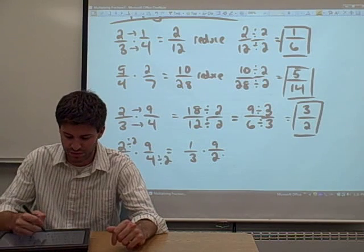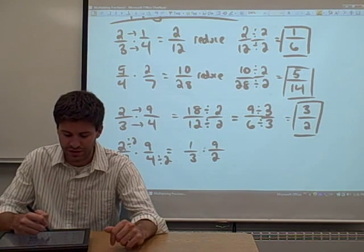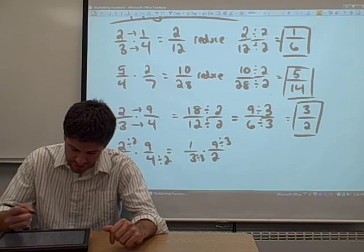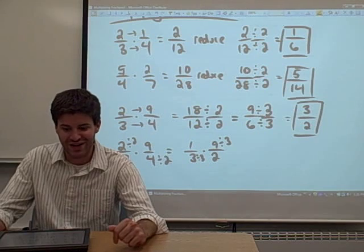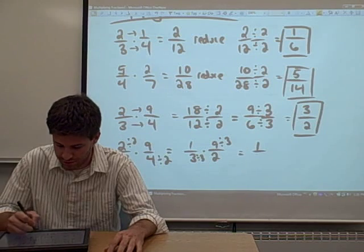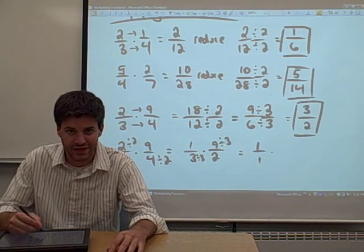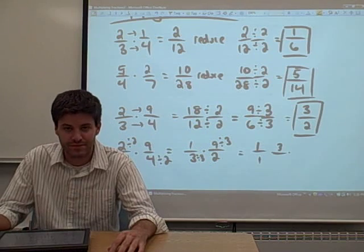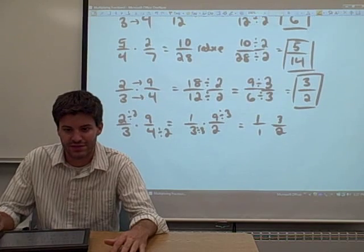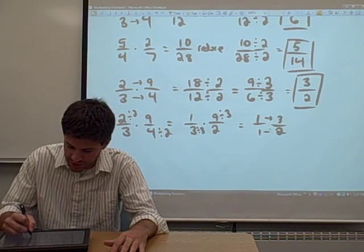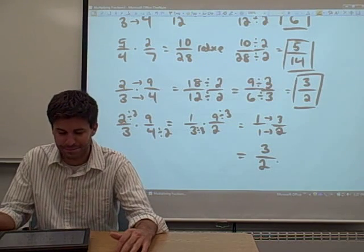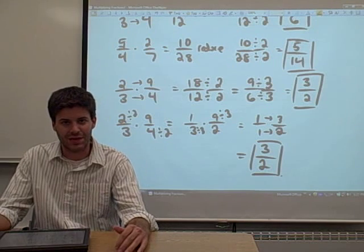Or you might notice you can do the same thing with the nine and the three. The nine and the three have a common factor — three. You can divide both the three and the nine by three. What you get is one over one times three over two. Now multiply the fractions that remain straight across. One times three is three, one times two is two. You get the same answer — three halves.